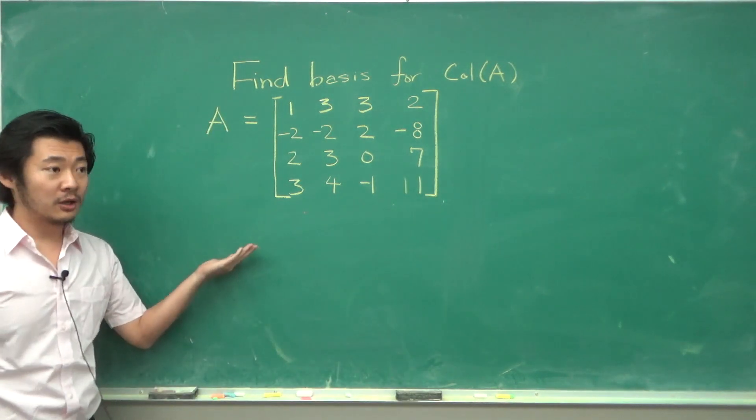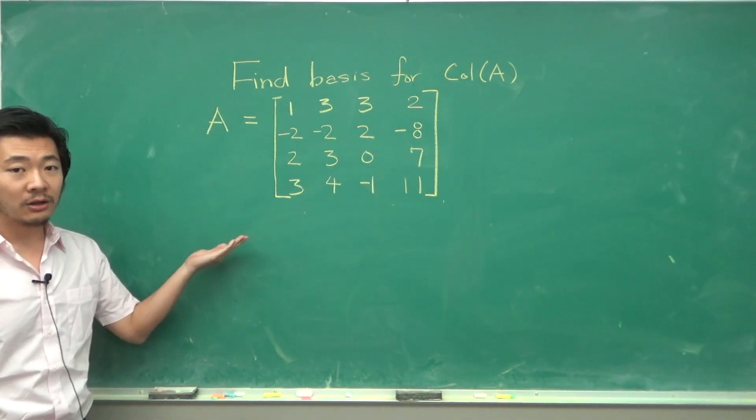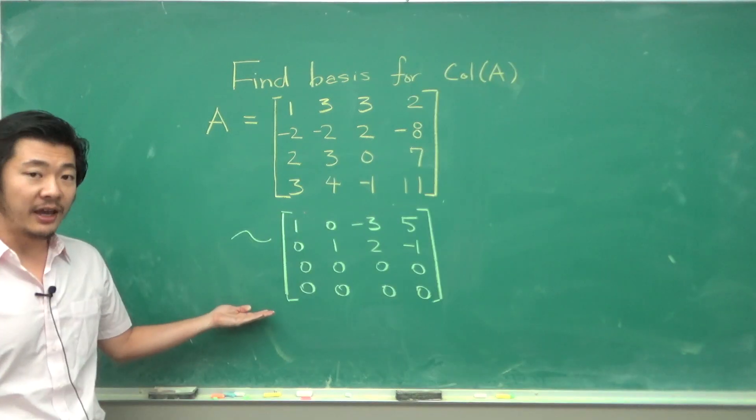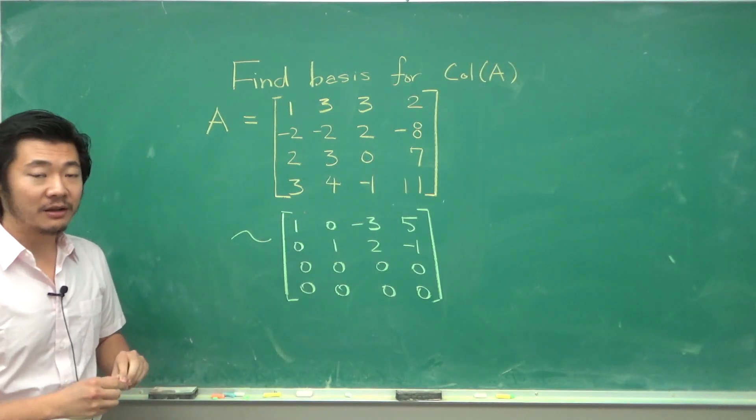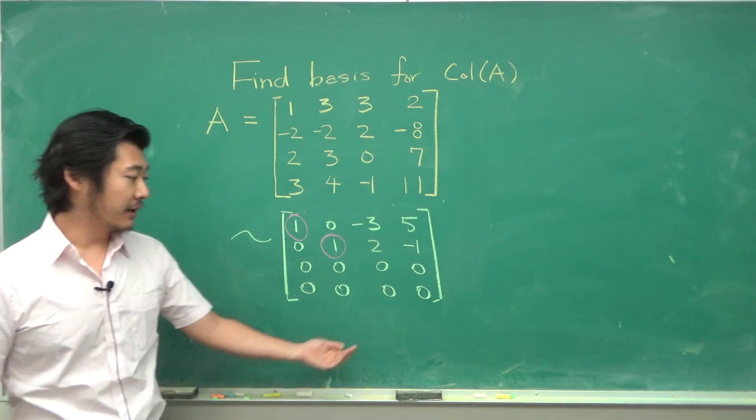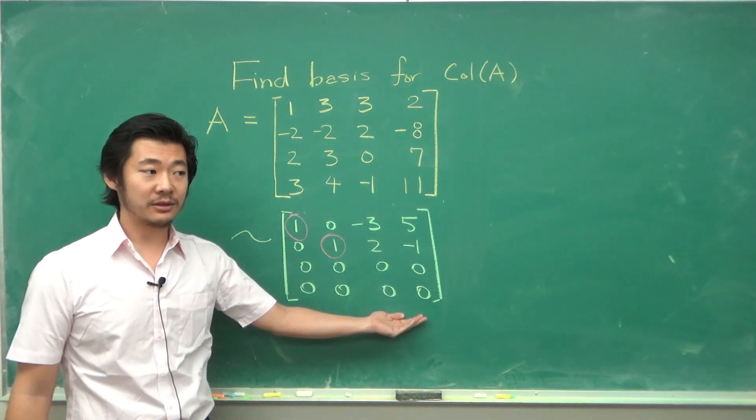So if we row reduce A we get the following: this is A in row reduced echelon form. We have two pivot columns, the first two, and we have two free variables x3 and x4.